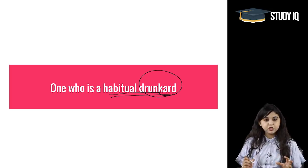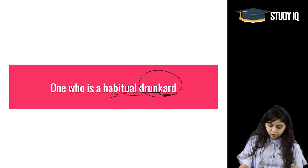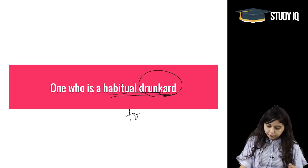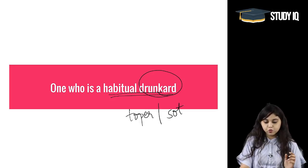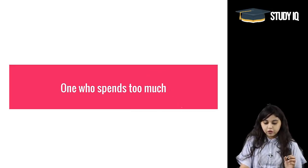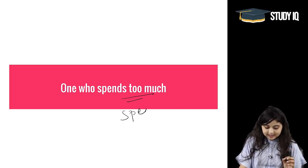Moving on to the next category: one who is a habitual drunkard — this person is called a 'sot.' We can call such a person a sot. One who spends too much is called a 'spendthrift.'